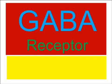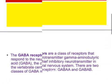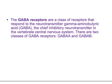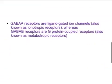The GABA receptors are a class of receptors that responds to the neurotransmitter gamma-aminobutyric acid — the chief inhibitory neurotransmitter in the vertebrate central nervous system. There are two classes of GABA receptors: GABA A and GABA B. Remember this important point: it is an inhibitory neurotransmitter.